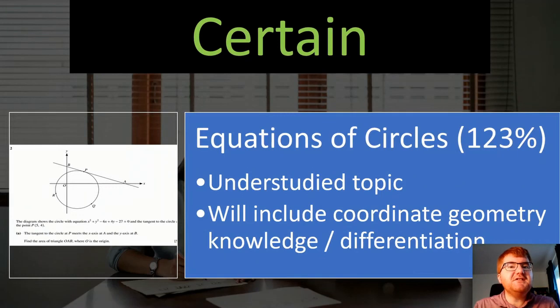On to equations of circles. This is something very particular to the A-level 9709 paper one course. It's often understudied because it often gets missed with all the calculus on the course and binomial and other things. It can include things of coordinate geometry, perpendicular bisectors. As you can see in this question, a tangent to the circle. So make sure you've revised that along with differentiation too.